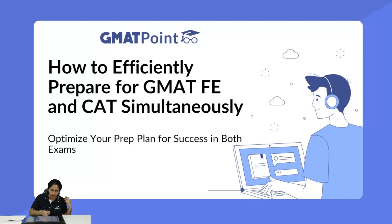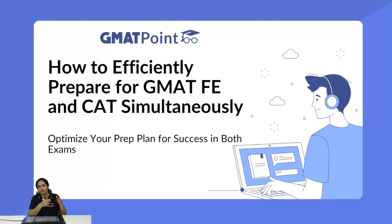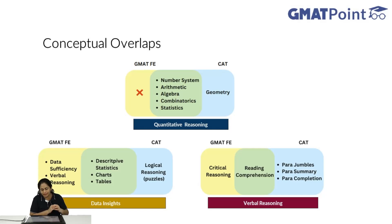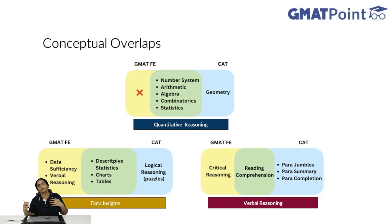Let us see what are the areas which are common to both of them, how we can group the topics together and how we should actually order them in our preparation schedule. Let us first take a look at the conceptual overlaps between the exams. The yellow part is basically the concepts which are there only in GMAT, the blue parts which are only in CAT, and green is the overlap of the two.